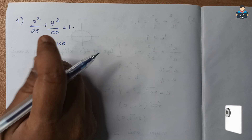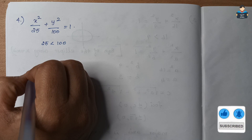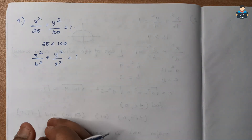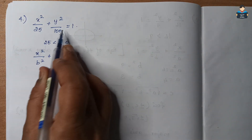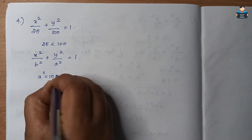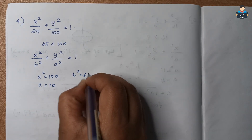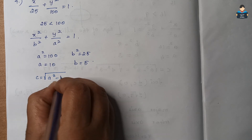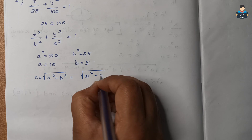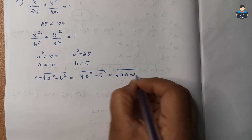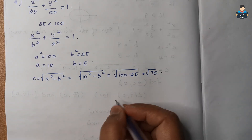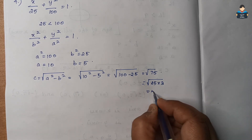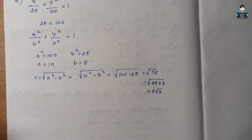This equation is an ellipse. Since the greater value is under y², we use the form x²/b² + y²/a² = 1. So here a² = 100, a = 10, b² = 25, b = 5. Next, we find c: c = √(a² − b²) = √(100 − 25) = √75 = 5√3.